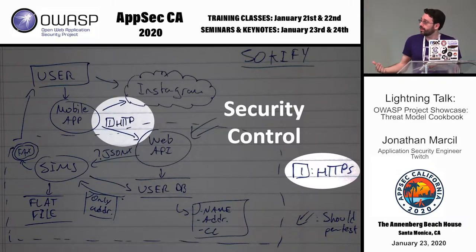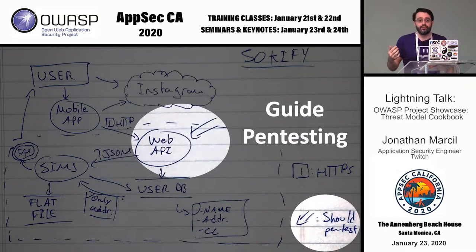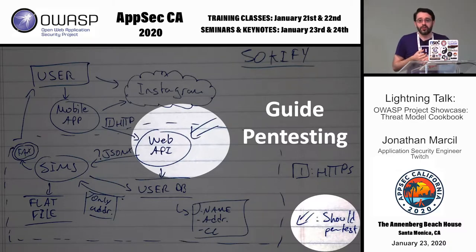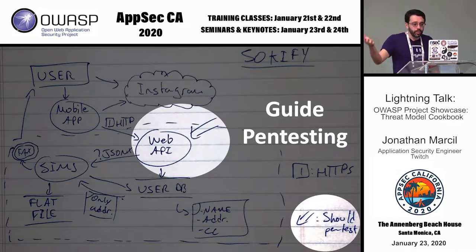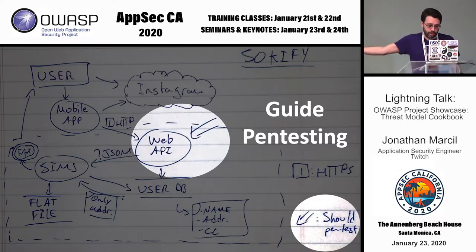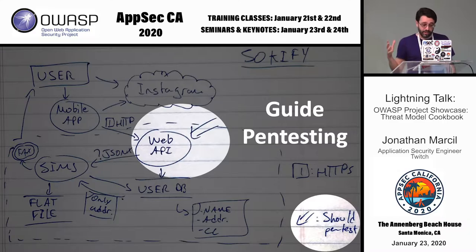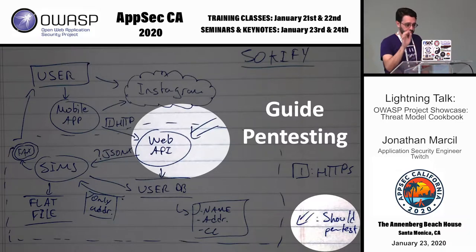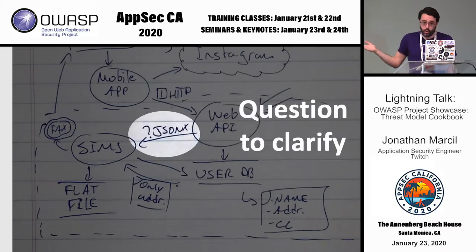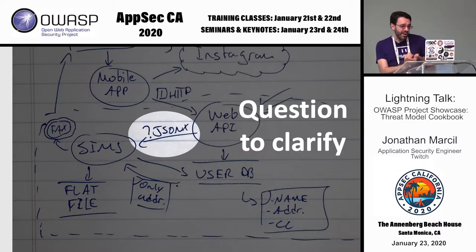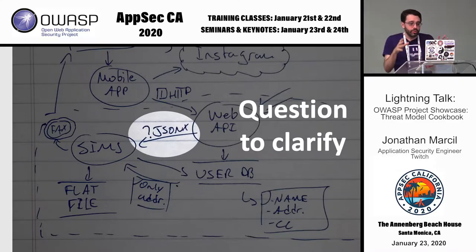Another thing you can do with it is guide pen testing. If you have a few pen testers and you don't have time to brief them or for them to meet the development teams, they can just take the model you created — point them to an arrow and they have a lot of context, knowing what other systems are around. You can also add open questions, like: is it JSON? What is this protocol? Are we sure about the other protocols that go with it?